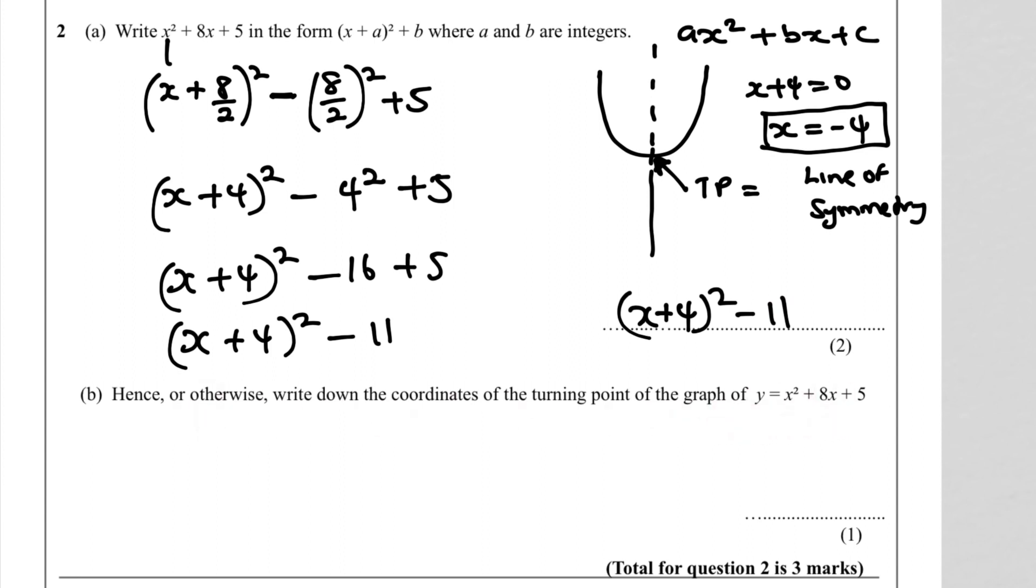The x-coordinate is -4, and the y-value at the turning point is -11. So the turning point coordinates are (-4, -11).